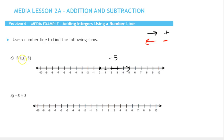Now we have to add a negative 3, which means we need to move 3 to the left. Starting at the point where we left off at 5, we're going to move 3 to the left — I'll do this a little bit above the line so we can see it — going 1, 2, 3 to the left. Notice we end up at 2. So positive 5 plus negative 3 gives us positive 2, because it's to the right of 0.